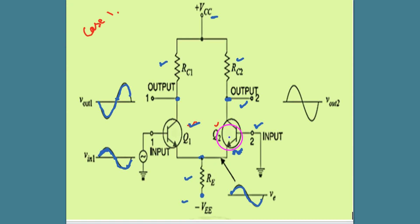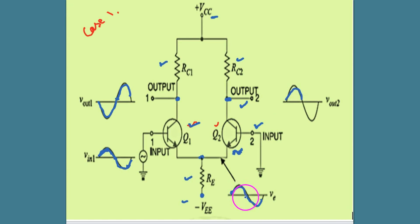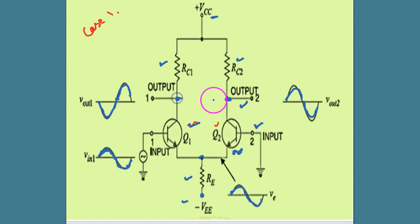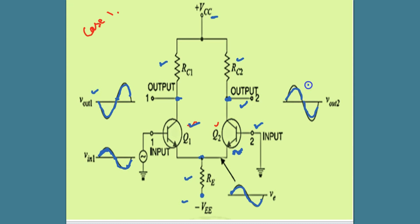In common base configuration, the output is in phase with the input signal — the output and input remain in phase, and the signal is also amplified. So a positive cycle at the input gives a positive cycle here as well. Ultimately, Vout1 and Vout2 have a 180-degree phase reversal between them.